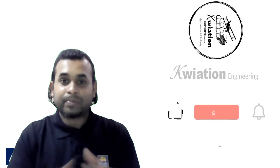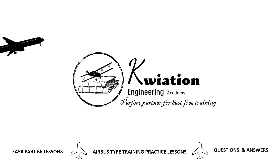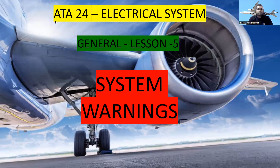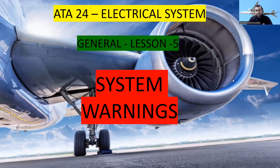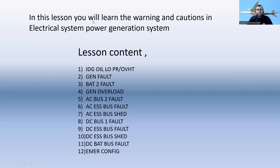Let's go to the lesson. This is ATA Chapter 24 Electrical System General, Lesson Number 5 - System Warnings. In this lesson you will learn the warnings and cautions in the electrical system power generation system. The lesson content covers: IDG oil low pressure and overheat, generator fault, battery two fault, generator overload, AC bus two fault, AC essential bus fault, AC essential bus shed, DC bus one fault, DC essential bus fault, DC bat bus fault, and emergency configuration.